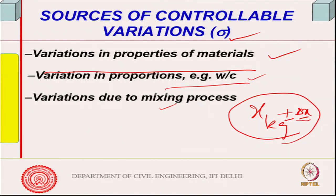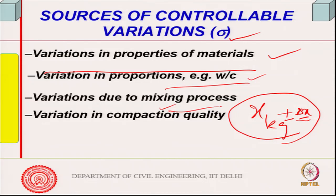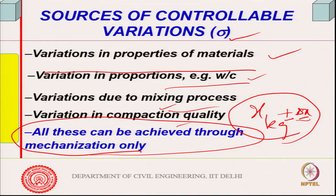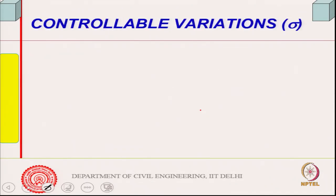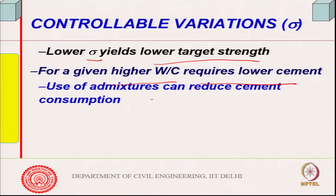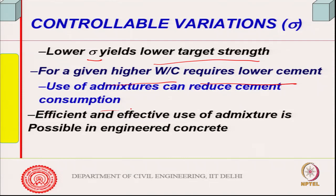The mixing process also introduces variation in strength — proper mixing gives less variation. Variation in compaction quality is another factor. All of this can be improved through mechanization and industrialization of the production process, which also makes concrete more sustainable by reducing cement and resource consumption. Use of admixtures — such as plasticizers and superplasticizers — can further reduce cement consumption, and are best used in engineered concrete where quantities are controlled precisely.